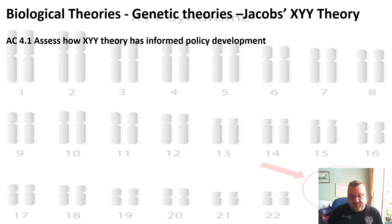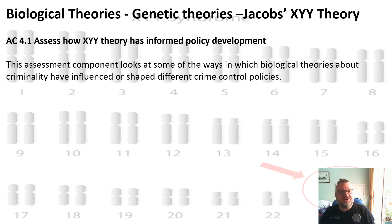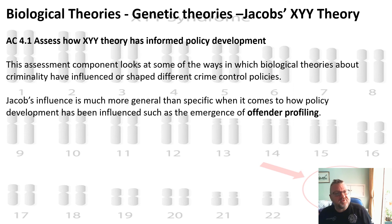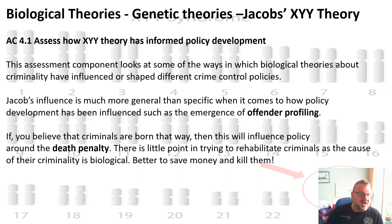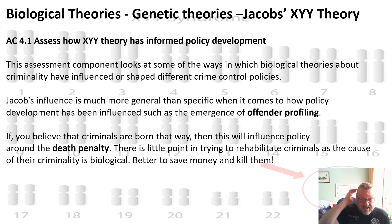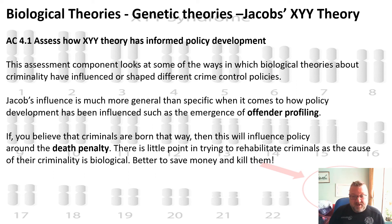So how does XYY syndrome inform policy development? It informs it in a general way. It will have a role in offender profiling, and Jacobs's work will have some influence there. Like all biological theories, it also links to debates around the death penalty: if you believe that crime is caused by genetics, then it can't be cured and there's little point in trying to rehabilitate. So the death penalty is seen as cheaper and saves money. I hope you found that presentation interesting and I will see you soon.